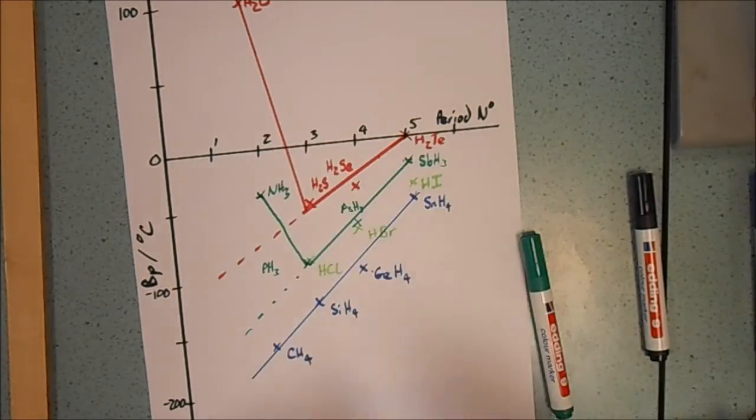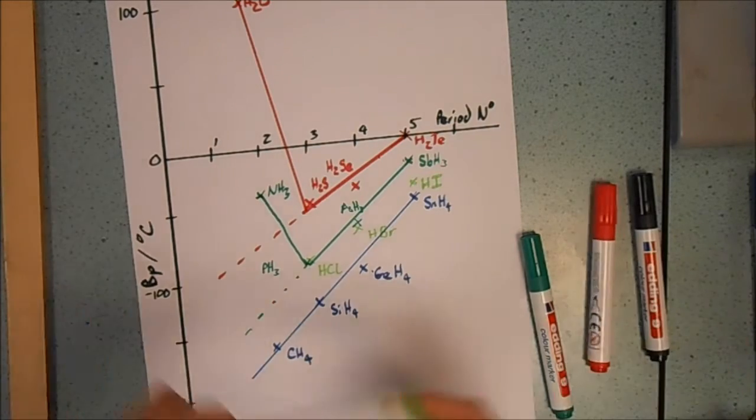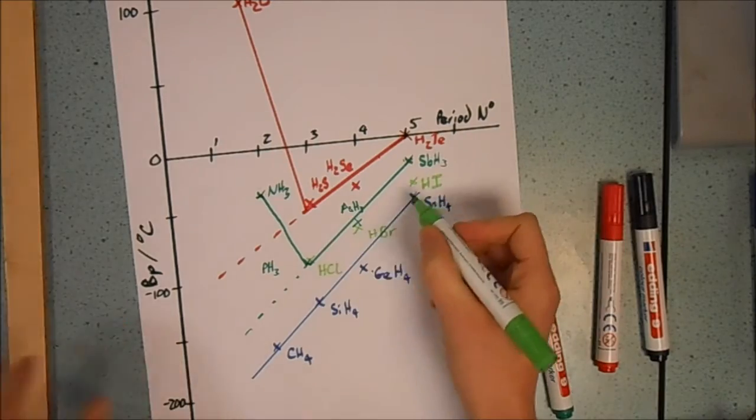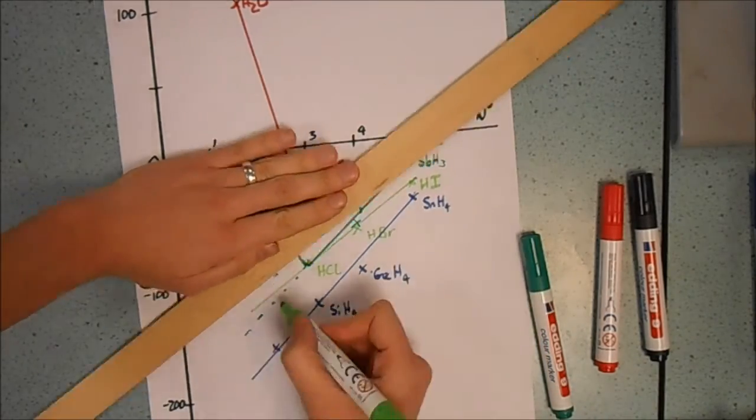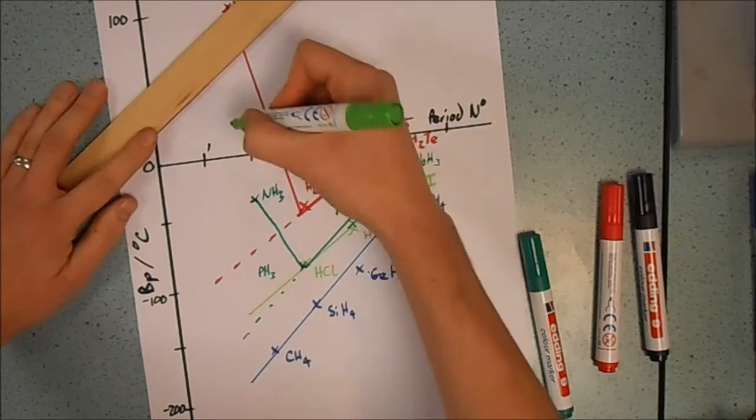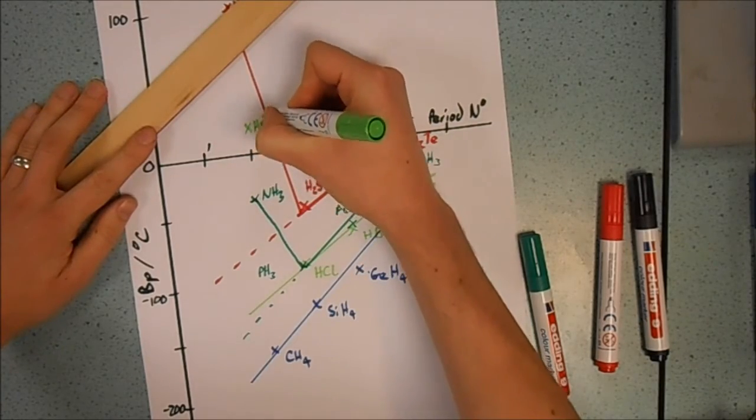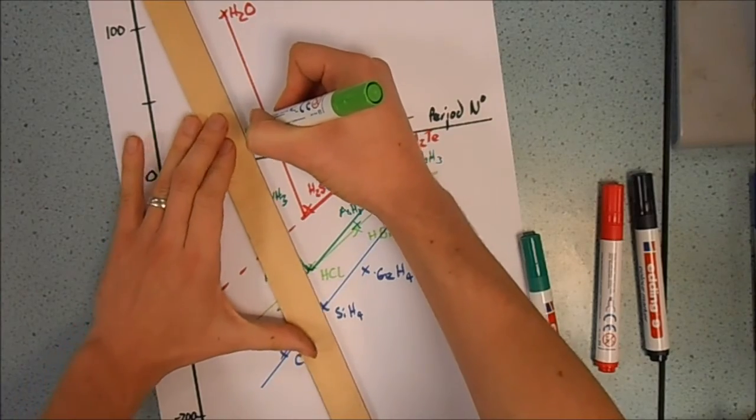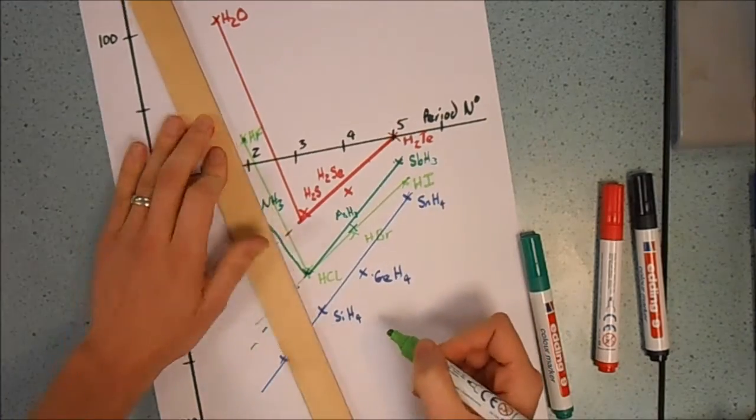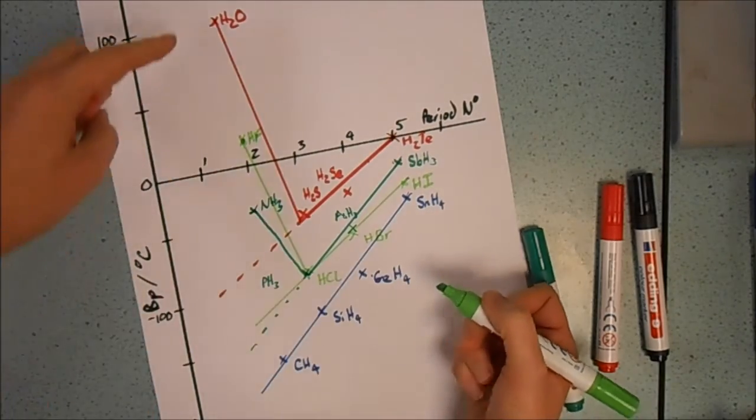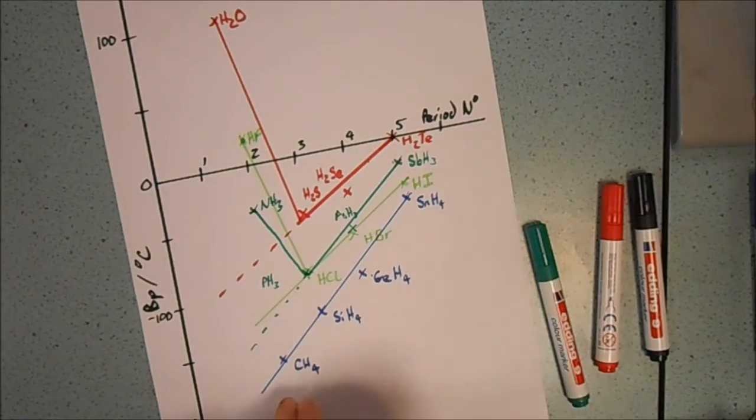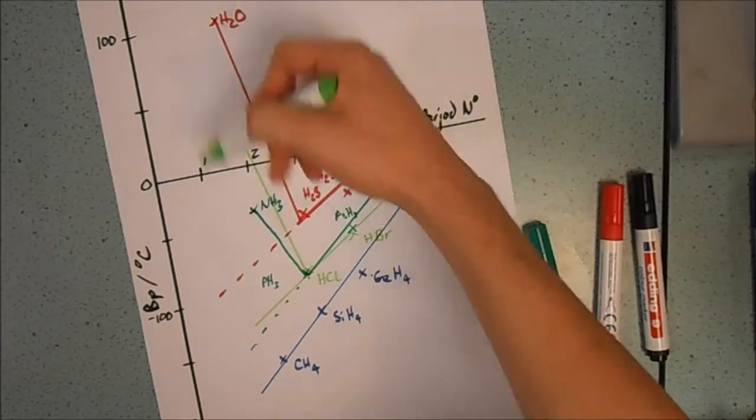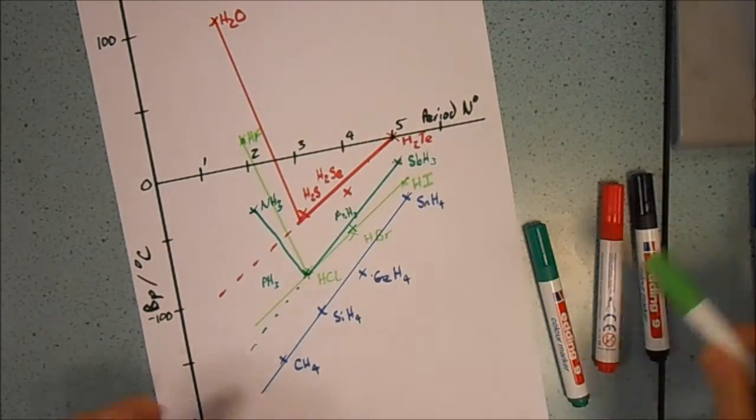And it's the same with fluorine as well. HF should be somewhere down here, but it isn't. It's actually up here. So that tells us that something weird is going on when we have a hydrogen joined to those three elements. Carbon seems to fit the pattern, but these three elements seem to not fit the pattern. And there must be something odd going on.